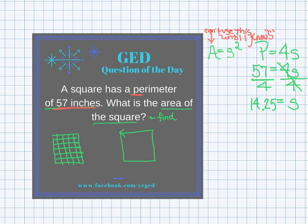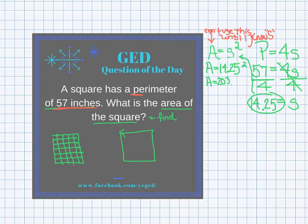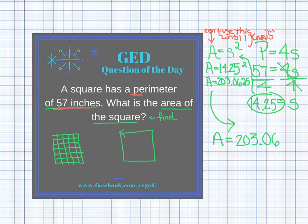Now that I know s is 14.25, I can plug into the area formula. The area equals s squared, which is 14.25 squared — squaring just means multiplying by itself. There is an x² button on your calculator; hit it with this number still in and you'll see the area equals 203.0625.